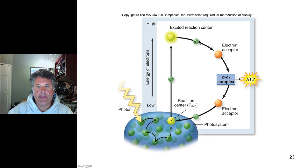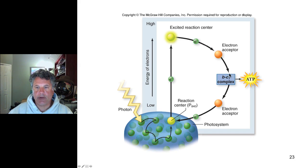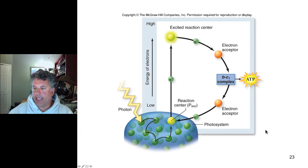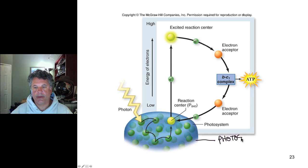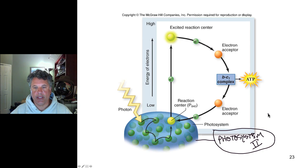Electrons are excited to a high energy state and passed to electron acceptors. In the process, ATP can be generated via chemiosmosis, because hydrogen ions are pumped, which allows ATP synthase to make ATP. The electrons are eventually recycled directly back to the photosystem. Water does not contribute electrons to replace those lost by the photosystem — rather there is a cyclic flow of electrons. Interestingly, the purple non-sulfur bacteria photosystem has homology to photosystem II of plants.